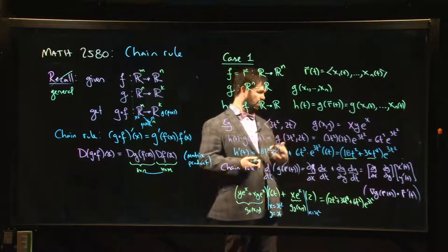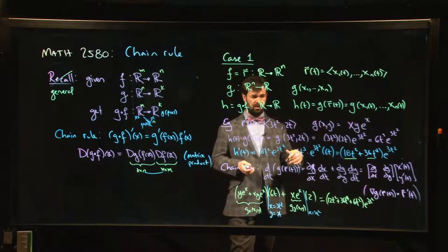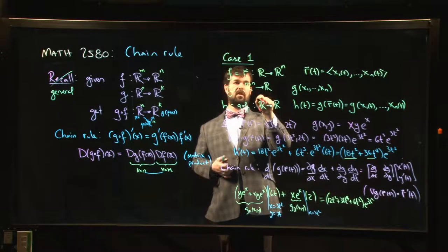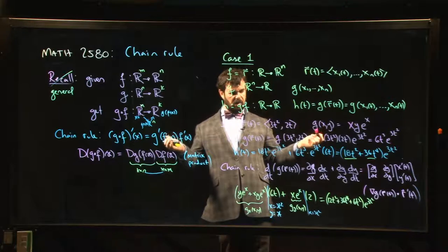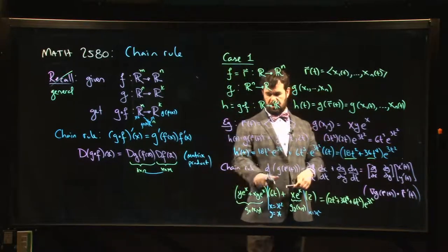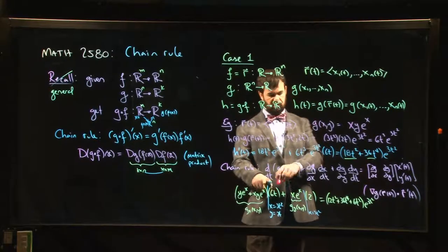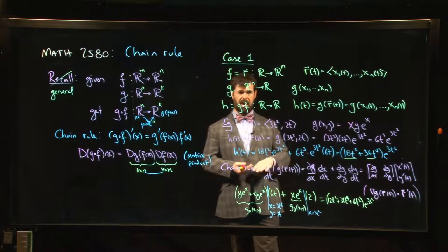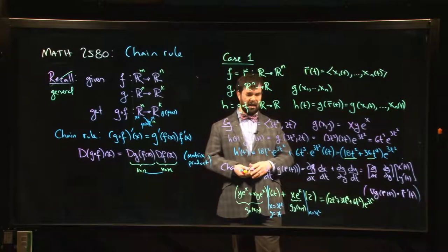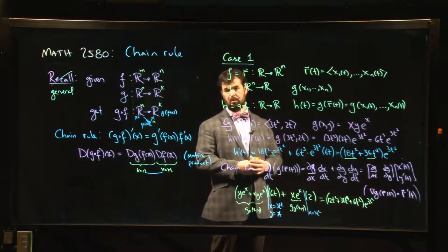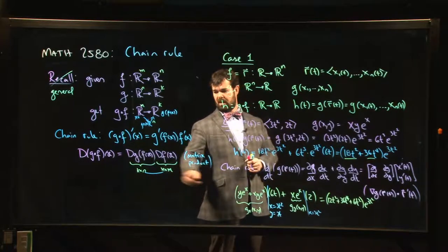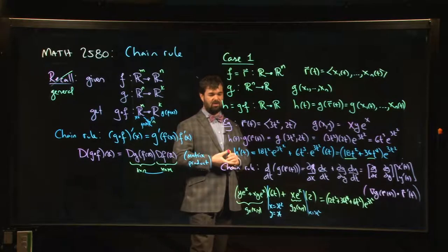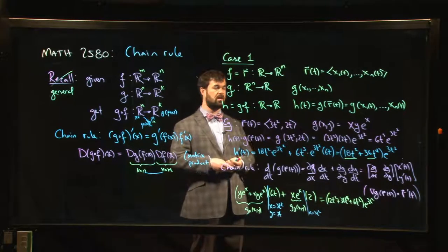We'll encounter other cases in class — I'm just doing this one because this video is already quite long. The other cases involve functions that depend on more than one variable, say u and v. The only real change is that instead of a single t-derivative you get partials with respect to u and v, but the same pattern applies. Most of the time, doing chain rules is about getting used to these patterns. If you ever forget, you can fall back on the matrix product definition — just remember how the rows and columns are arranged.